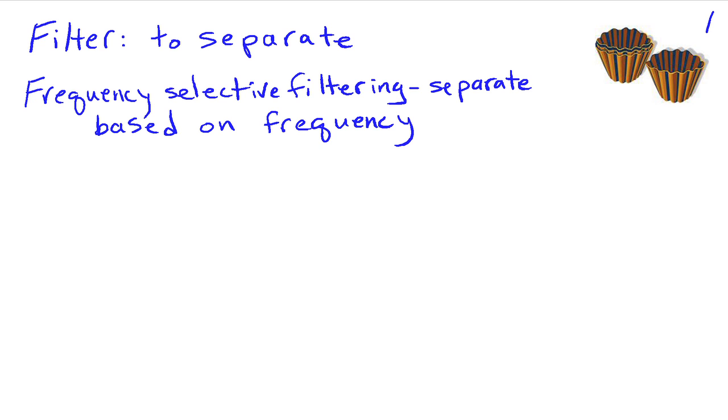So we have different types of filters. We can look at a low-pass filter, which is going to pass the low frequencies and eliminate the high frequencies or block them.